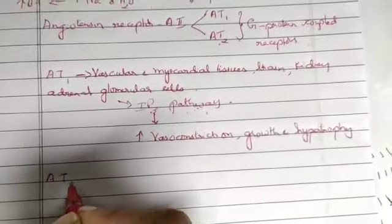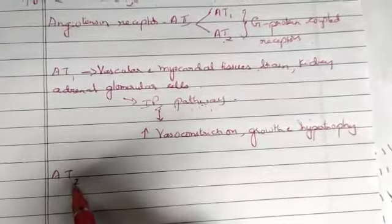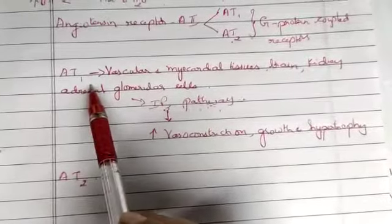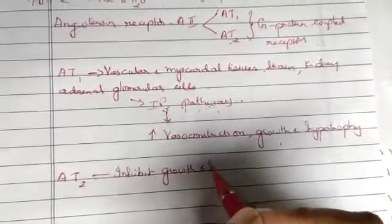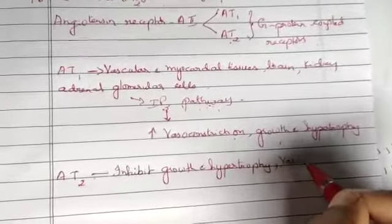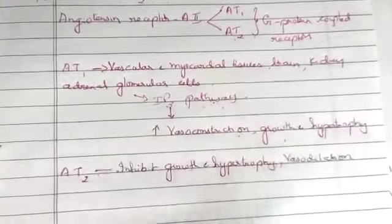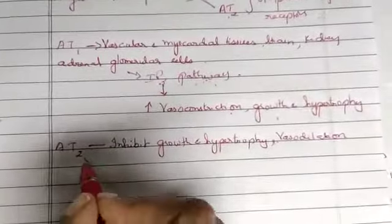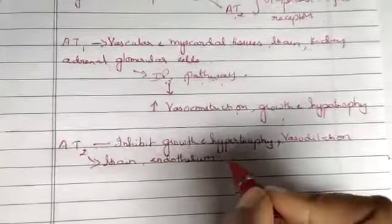The second receptors, A2 receptors, normally mediate actions opposite to those of A1 receptors. Whereas A1 is responsible for increasing growth and hypertrophy, A2 inhibits growth and hypertrophy. Whereas A1 causes vasoconstriction, A2 causes vasodilation. A2 receptors are most commonly seen in the brain, endothelium (the lining of blood vessels), kidney, and also in fetal tissue.